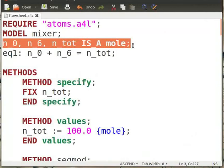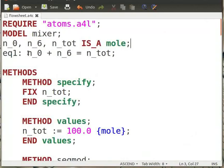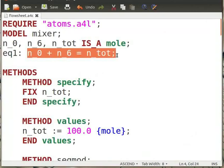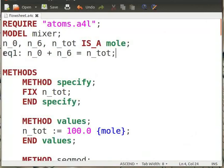Define the streams as a mole. Now we define the equation for mixer by simple mole balance as n0 plus n6 equals n_tot. Note that labels like equation 1 are not necessary to write, but this helps in debugging the code.